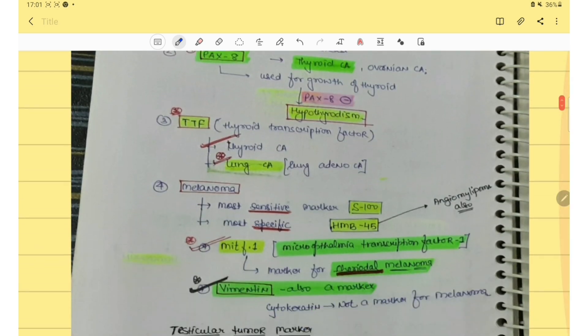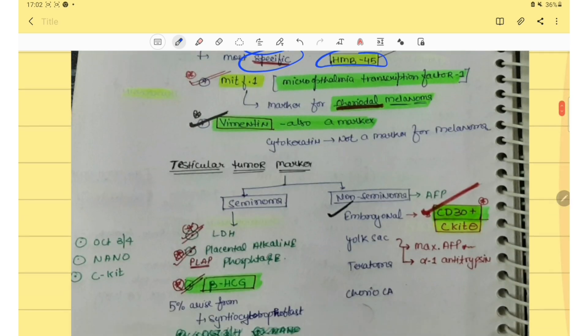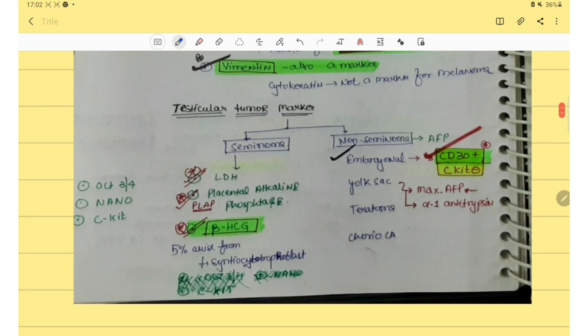Next you should know about melanoma. Melanoma marker most sensitive is S100 and most specific is HMB45. Then testicular tumor marker, this is very important. You have to know about the seminoma marker and non-seminoma marker. In seminoma we have LDH, PLAP and beta-HCG of 3x4 nano and CKIT. In non-seminoma that is embryonal which is CD30 positive and CKIT negative.